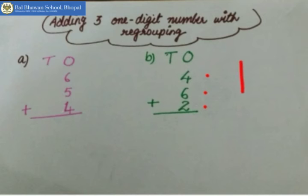So the answer is 12. Now children, you again got a 2-digit number as an answer, as the sum. Alright?